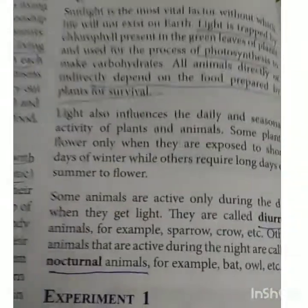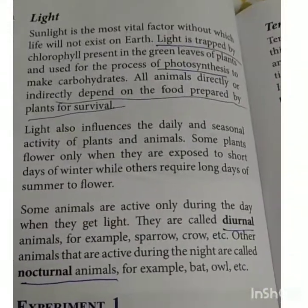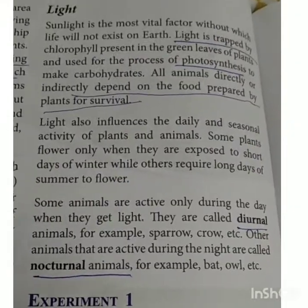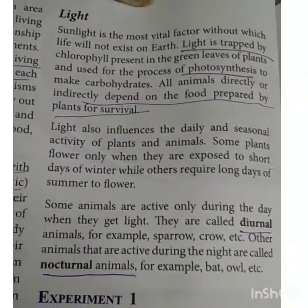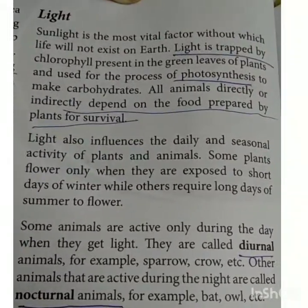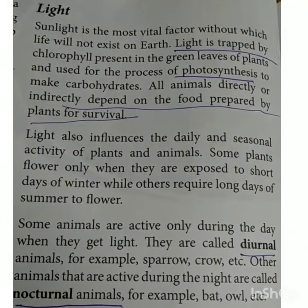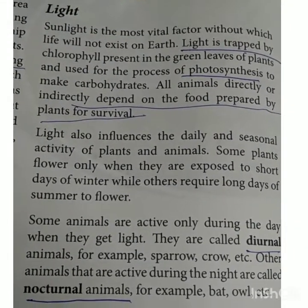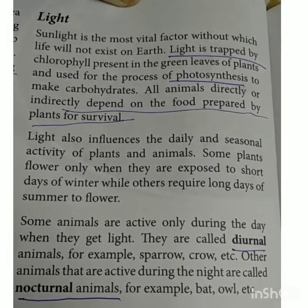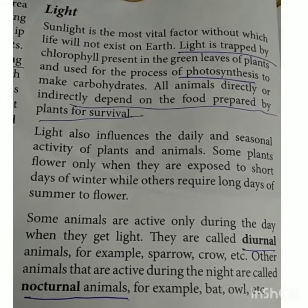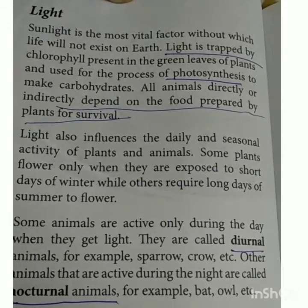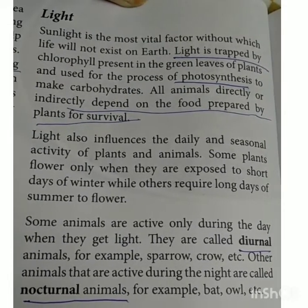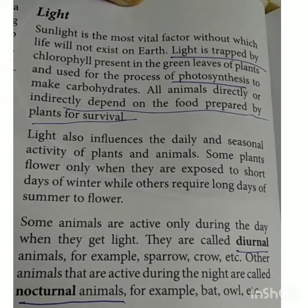In the Abiotic component, the details are given for each Abiotic component. First is Light. Sunlight is the most vital factor without which life will not exist on Earth. Light is trapped by chlorophyll present in the green leaves of the plant and used for the process of photosynthesis.